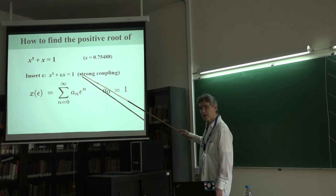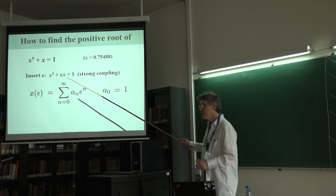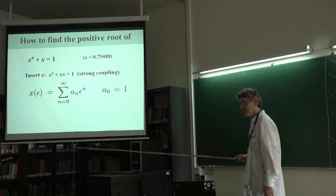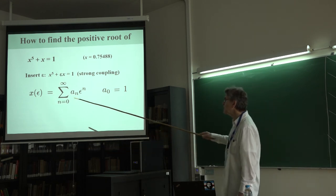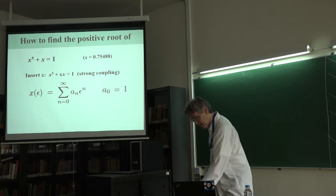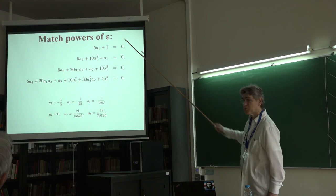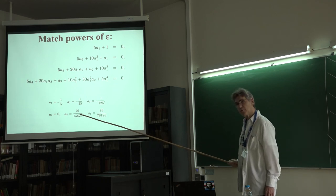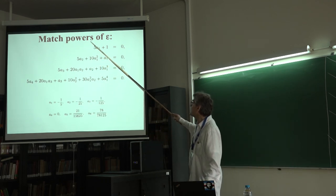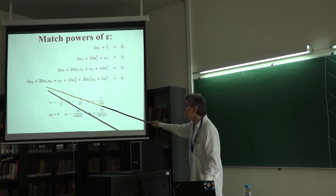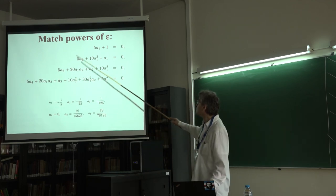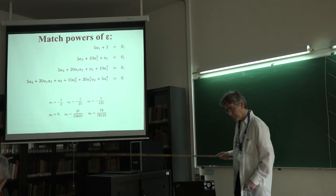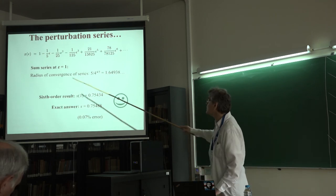You use a strong coupling approximation — strong coupling because I'm putting a small parameter in front of the term with the lower power of x. You match powers of epsilon and get a series of equations for the coefficients. Each coefficient is determined linearly, so there's a unique solution. You solve for a1, a2, a3, a4, and so on. These are the results, and here is the perturbation series.